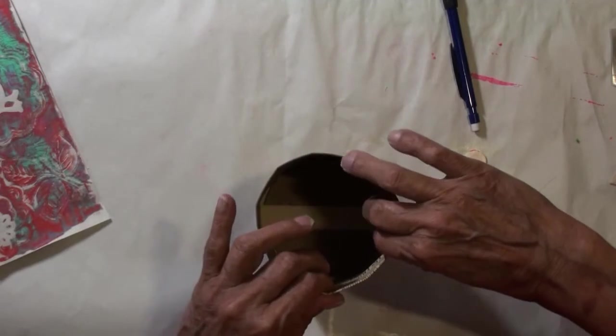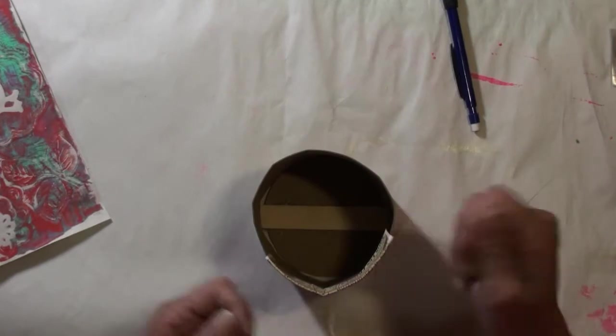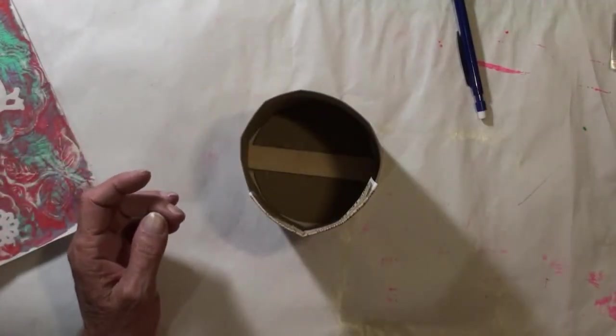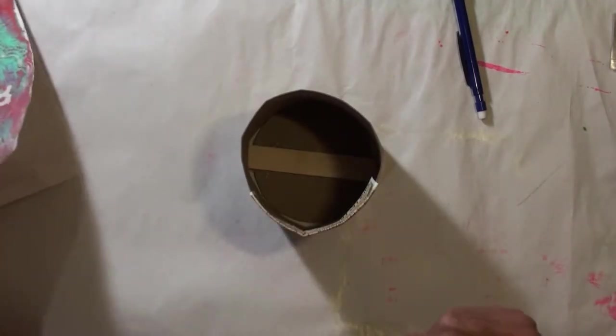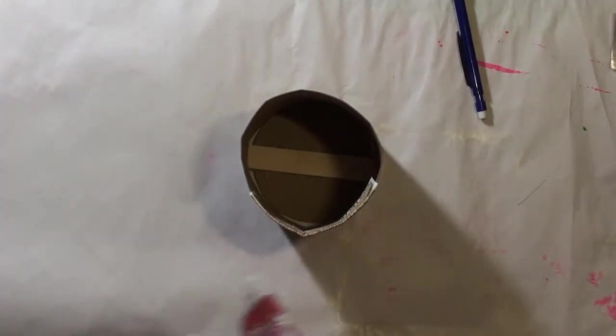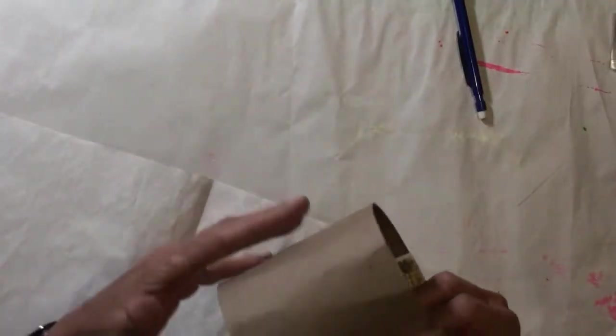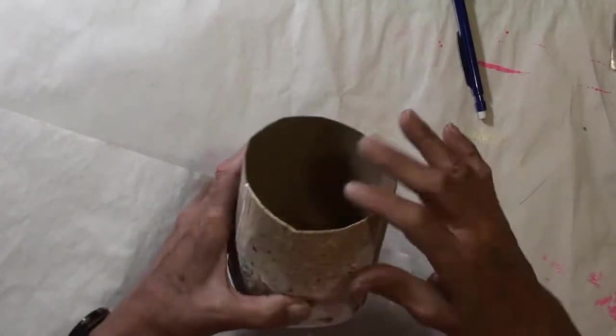But my cans, you know, you have to have that special can opener to not have the ends sharp, and I don't have that. So I'm just going to use what I have. And I cut chipboard. I kind of made a sort of circle.